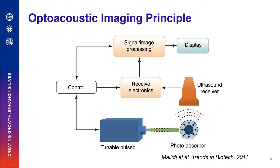Here's a quick overview of the optoacoustic imaging principle. The word optoacoustic literally means light and sound, or more specifically, light-induced ultrasound. Tissue absorbs light from the laser that is impinging on it, and that causes a thermoelastic expansion of tissue, which in turn generates an ultrasound wave. The wave can then be detected by a conventional ultrasound transducer that converts the waves to electrical signal, which can then be processed using signal imaging processing algorithms to form an image. A typical optoacoustic setup consists of a tunable nanosecond pulse laser source as well as an ultrasound detection system.